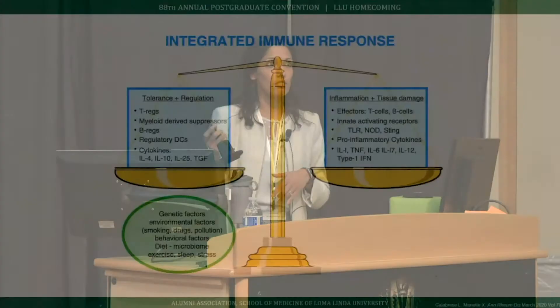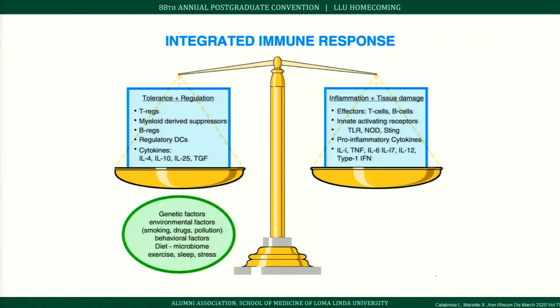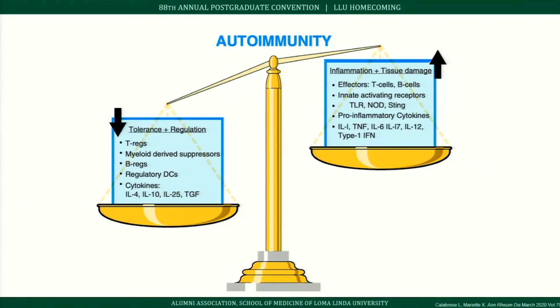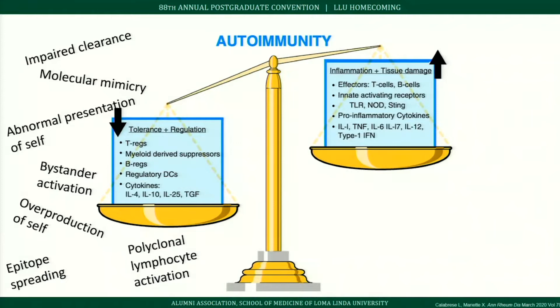Factors in the green circle on the bottom left influence whether this balance is maintained. In autoimmunity, tolerance and regulation are downregulated while the inflammatory side is upregulated — too little anti-inflammatory activity and too much pro-inflammatory activity. Mechanisms associated with this include impaired clearance of apoptotic debris, molecular mimicry, abnormal presentation to self, overproduction of self-antigens, polyclonal lymphocyte activation, and epitope spreading.